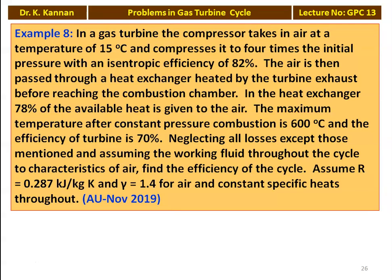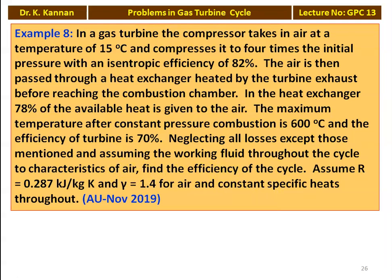This is example number 8 from November 2019 question paper. In a gas turbine, the compressor takes in air at a temperature of 15 degree Celsius and compresses it to 4 times the initial pressure with an isentropic efficiency of 82 percent. The air is then passed through a heat exchanger heated by the turbine exhaust before reaching the combustion chamber. In the heat exchanger, 78 percent of available heat is given to the air. The maximum temperature after constant pressure combustion is 600 degree Celsius. The turbine efficiency is 70 percent. Neglecting all losses except those mentioned and assuming the working fluid throughout the cycle has the characteristics of air, find the efficiency of the cycle. Assume R equal to 0.287 kJ/kg·K and gamma equal to 1.4 for air and constant specific heat throughout.